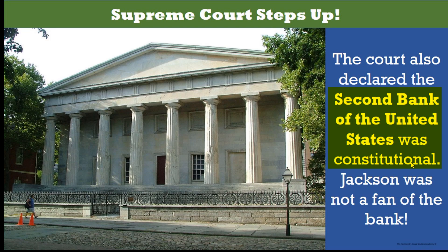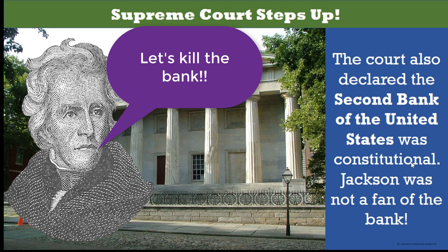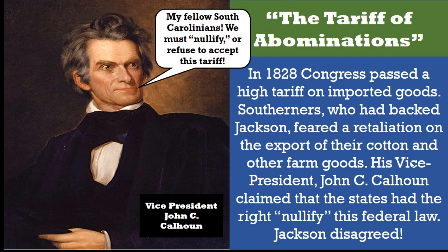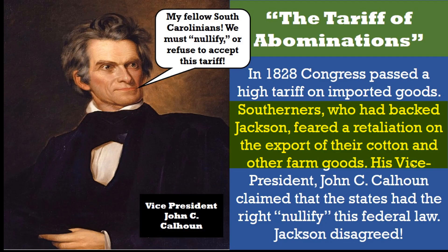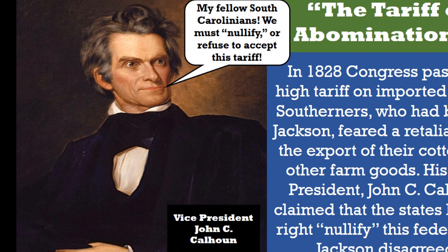The court ruled that the second Bank of the United States was constitutional, setting the stage for a showdown with future President Andrew Jackson and those like him who felt that the bank was unconstitutional. In 1828, Congress passed a high tariff on imported goods. Southerners who backed Jackson feared a retaliation on the exports of their cotton and other farm goods to Europe and beyond.